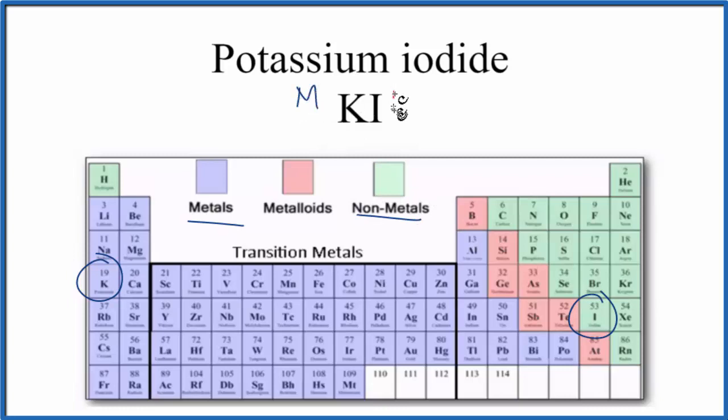So when we have a metal and a nonmetal bonded together, that will form ionic bonds, with few exceptions. So we have our ionic bond between the potassium and the iodine atom.